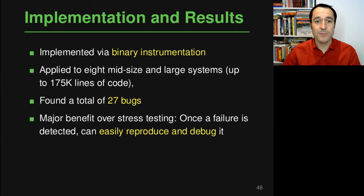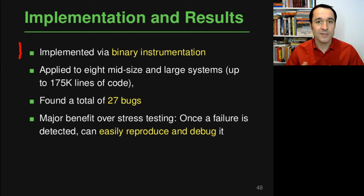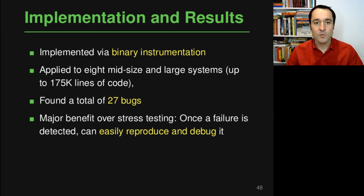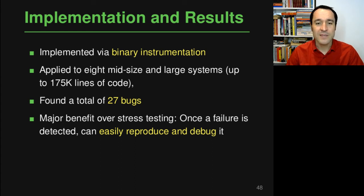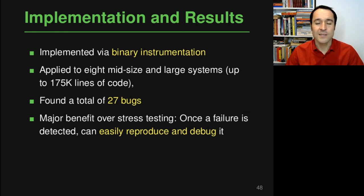CHESS has been implemented through binary instrumentation — taking an existing binary program with concurrent behavior, instrumenting it to control scheduling decisions at runtime. This implementation was applied to several mid-size and larger systems of up to 175,000 lines of code, in which the tool found a total of 27 bugs. Beyond finding bugs that stress testing might miss, once a failure is detected it's easy to reproduce and debug, because the scheduler controlled and recorded the interleaving that triggered the failure.